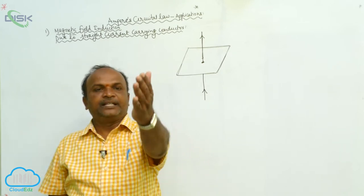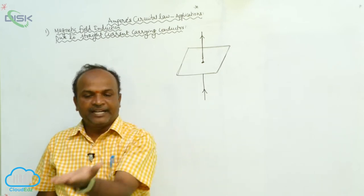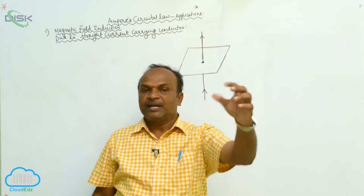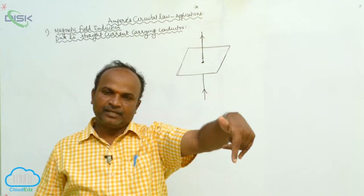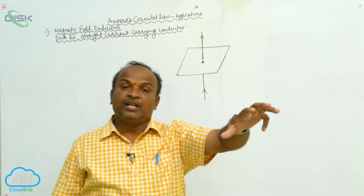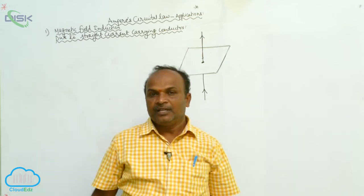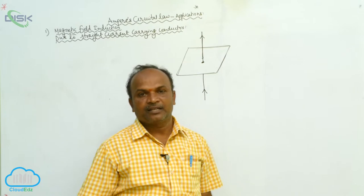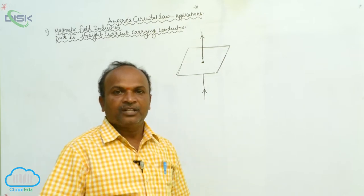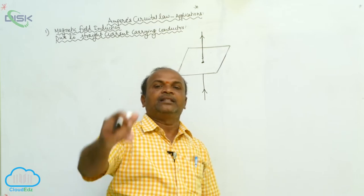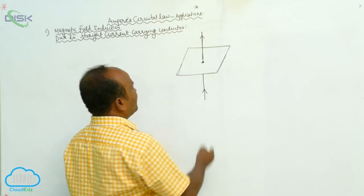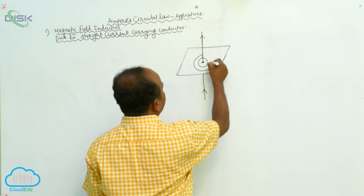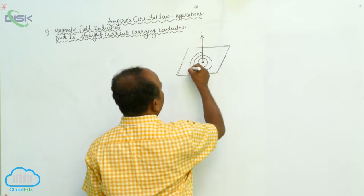Whenever the current is passing in the upward direction, the magnetic field lies in a plane perpendicular to the conductor. The magnetic lines of forces are concentric circles, with the current carrying conductor located at the center.